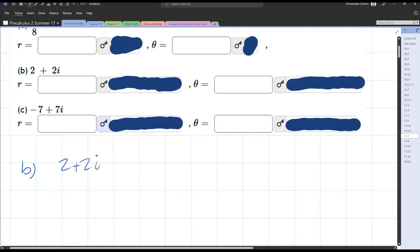So we're going to begin by graphing it. The first number is the horizontal or the x. The second number is the imaginary or the y. So this is over 2 to the right, up 2, and our number will be right here.